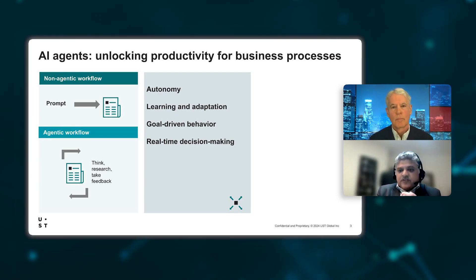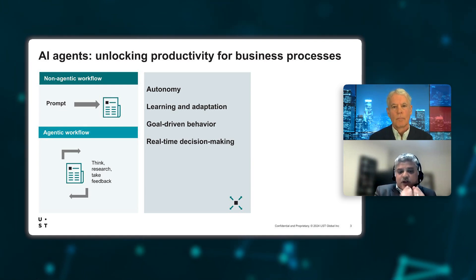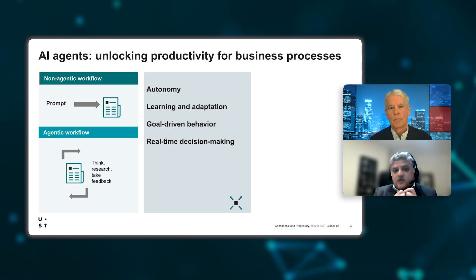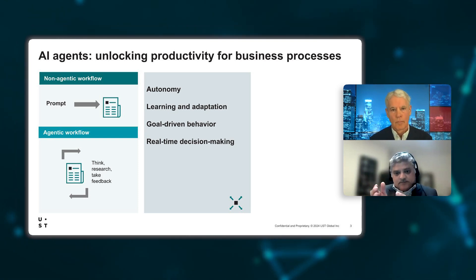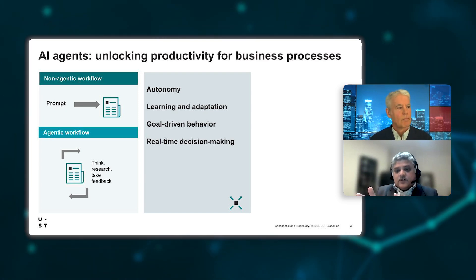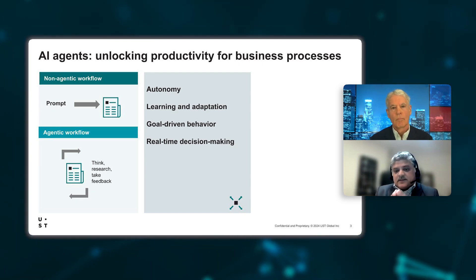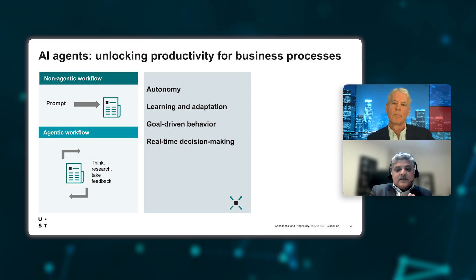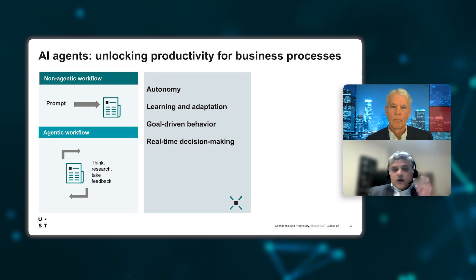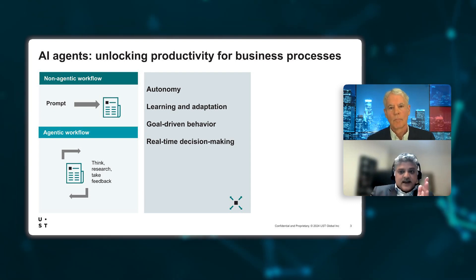Retrieval augmented generation is a technique where an AI model retrieves relevant data from external sources to enhance and inform its generated response. The last microcycle that took place is the agentic workflow, where AI systems are designed to autonomously perform tasks, make decisions, and act as independent agents in dynamic, changing environments. Those were the evolution and microcycles that occurred before agentic AI came to bear.